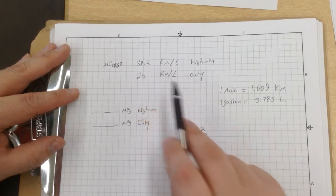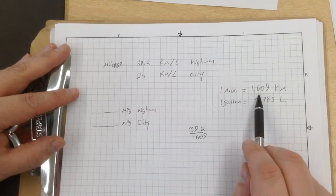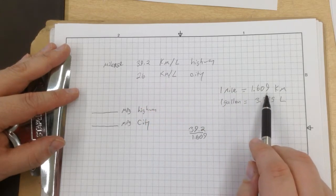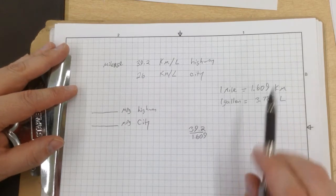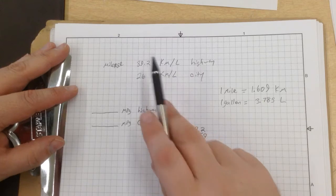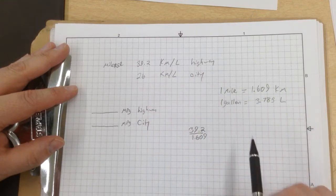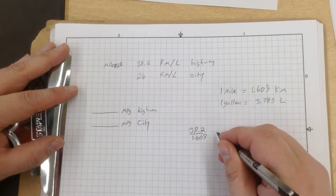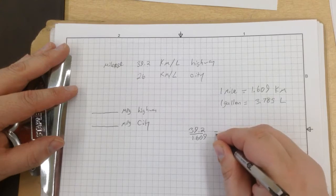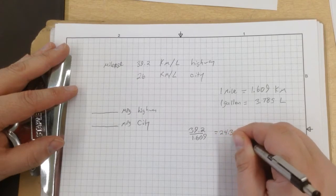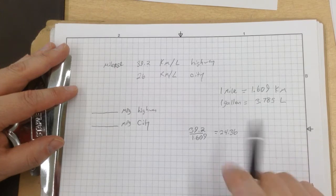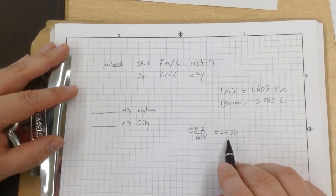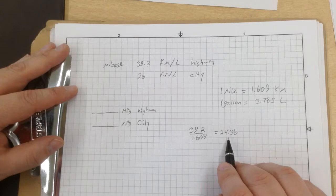You're asking why? Because 39.2 kilometers, one mile is equal to 1.609 kilometers. To figure out how many miles are in kilometers, we just divide it. 39.2 divided by 1.609 is going to give us 24.36. Now this is where you're going to make your mistake, because this is not 24.36 miles per gallon.